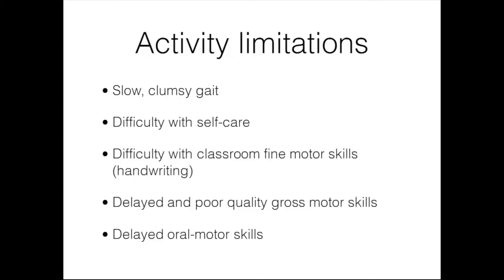Activity limitations for children with DCD include a slow and clumsy gait and difficulty with self-care — they may be messy eaters and have trouble buttoning shirts and tying shoes. They often have extreme difficulty with classroom fine motor skills, particularly handwriting. They show delayed and poor quality gross motor skills, especially higher-level skills like jumping, hopping, and skipping. They may also have delayed oral motor skills, affecting talking and eating.